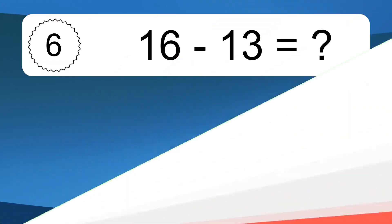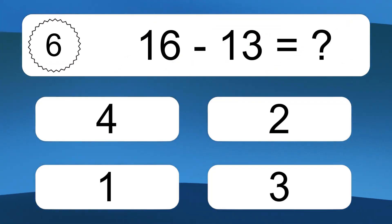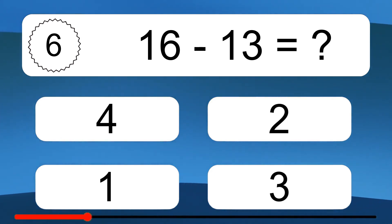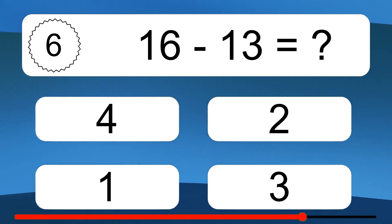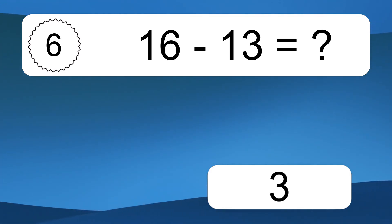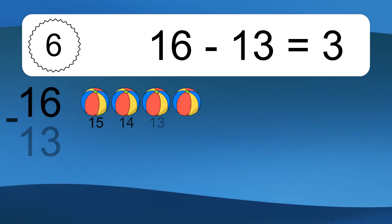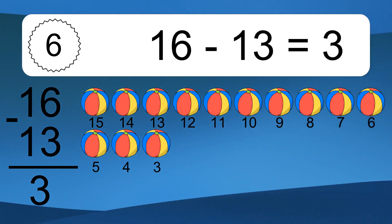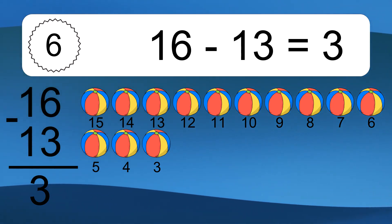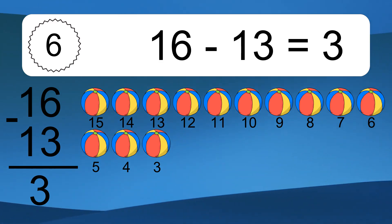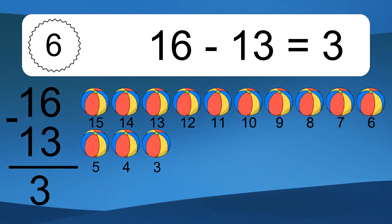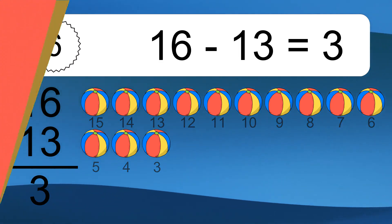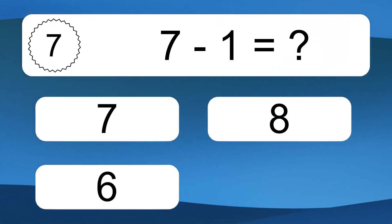16 minus 13 equals what? 16 minus 13 equals 3. Let's count it: 15, 14, 13, 12, 11, 10, 9, 8, 7, 6, 5, 4, 3.